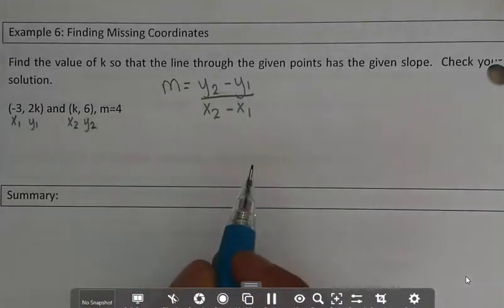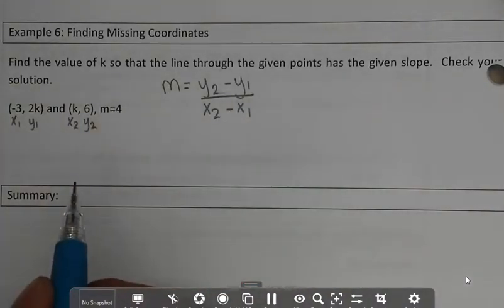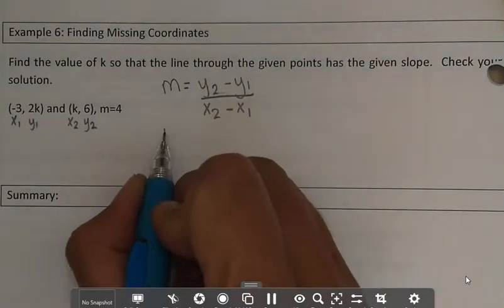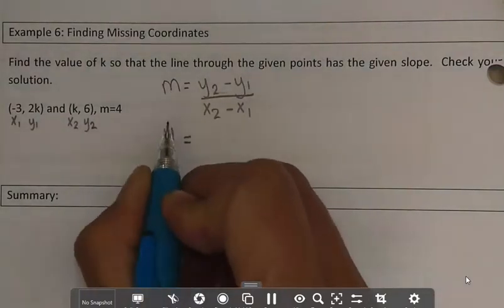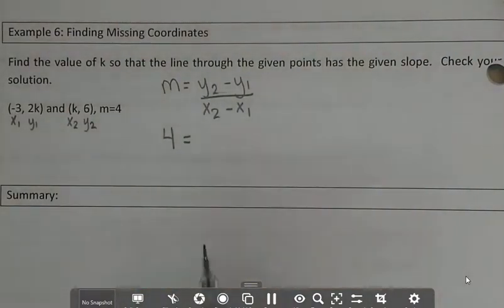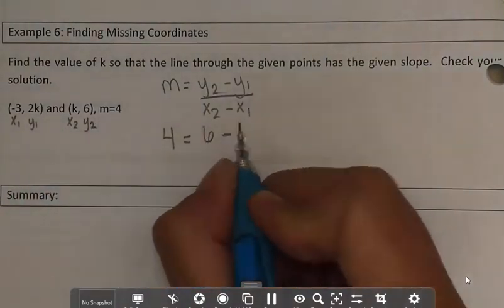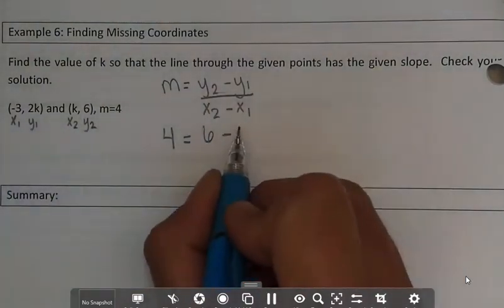So I'm going to use this equation to help me figure out what k is. So my slope is 4, plugging it straight in for m. y2 is 6, minus y1 is 2k,